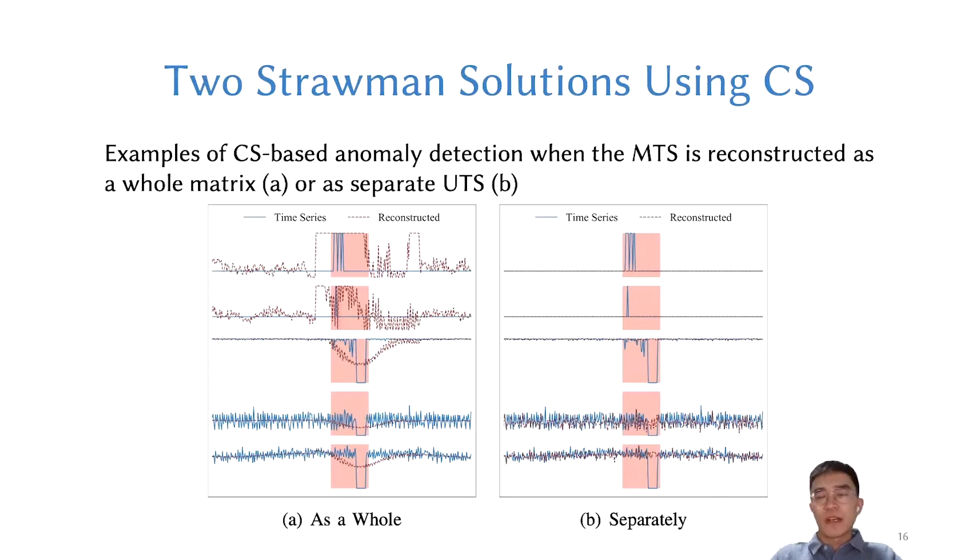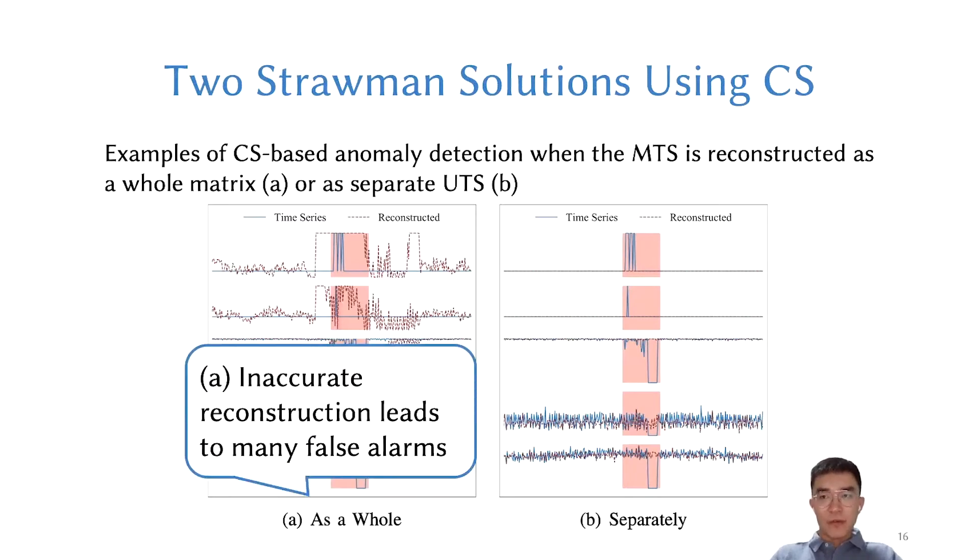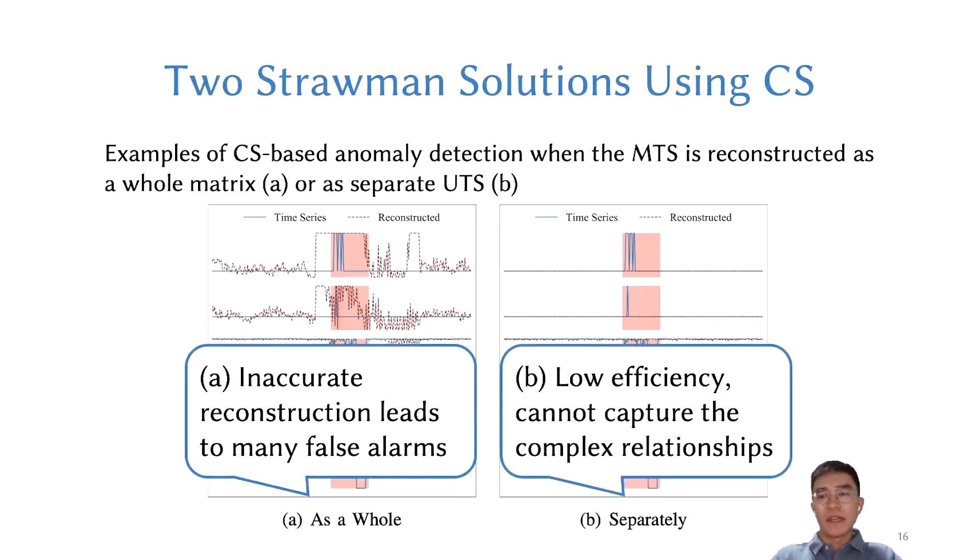Intuitively, we can apply CS to reconstruction in two ways. First, treating MTS as a whole matrix. Second, as separate UTS. These figures show the original time series and reconstructed while using two straightforward solutions, respectively. We may find the former one has many false alarms because of inaccurate reconstruction. The latter one still cannot capture the complex relationship and is time-consuming.